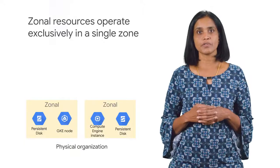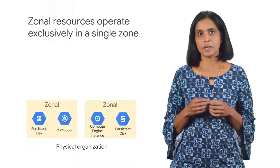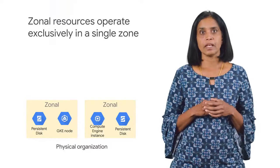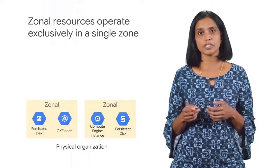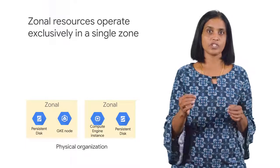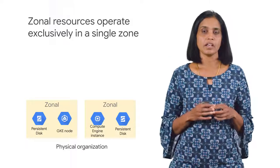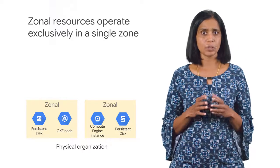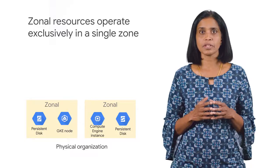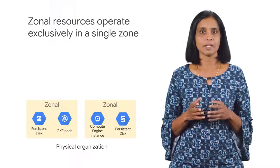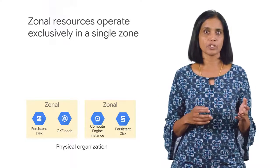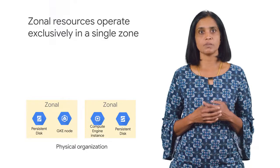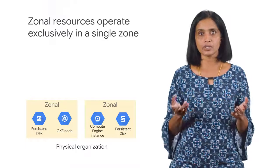When you take advantage of GCP services and resources, you get to specify those resources' geographic locations. In many cases, you can also specify whether you're doing so on a zonal level, regional level, or multi-regional level. Zonal resources operate within a single zone, which means that if a zone becomes unavailable, the resources won't be available either. A simple example could be a Compute Engine virtual machine instance and its persistent disks. GKE has a component called a node, and these are zonal too.